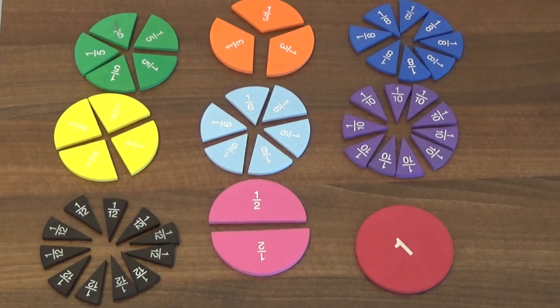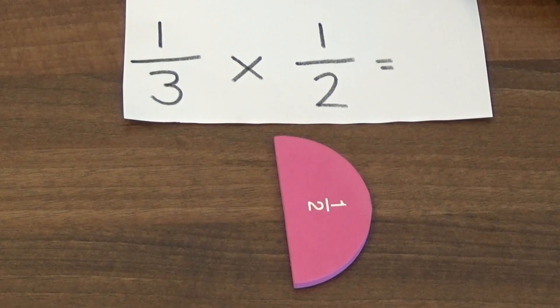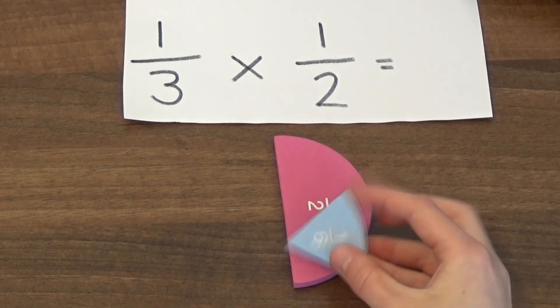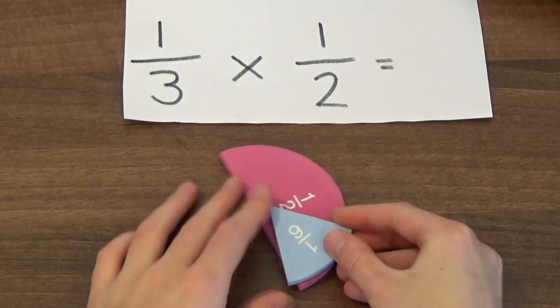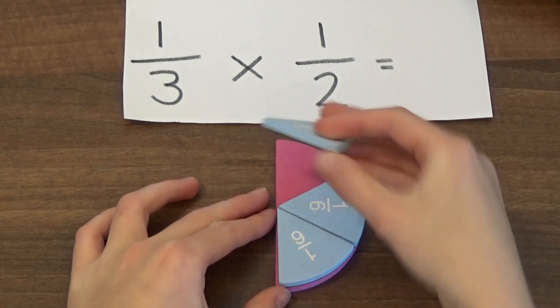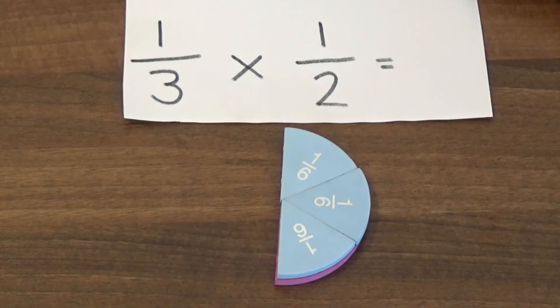I'm going to use fraction circles to help me. I have a half circle. Multiplying it by one third means I need to split my half into thirds, or three pieces. If I look at my other fraction circles, I can see that I can fit three sixths onto my half. So a third of a half equals one sixth.